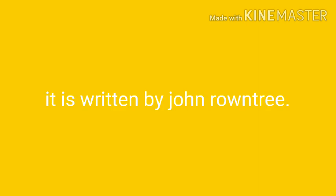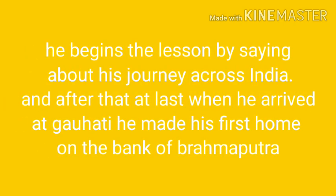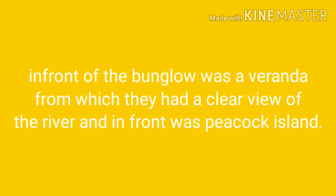John Rontree was the last British Senior Conservator of Forest of Assam. This lesson is taken from his book 'A Chota Sahib: Memoirs of a Forest Officer.' He begins the lesson by describing his journey across India. At last when they arrived at Gohati, they made their first home on the bank of the Brahmaputra. During that time the climate was bearable and their bungalow was cleaned and painted by the Public Works Department.